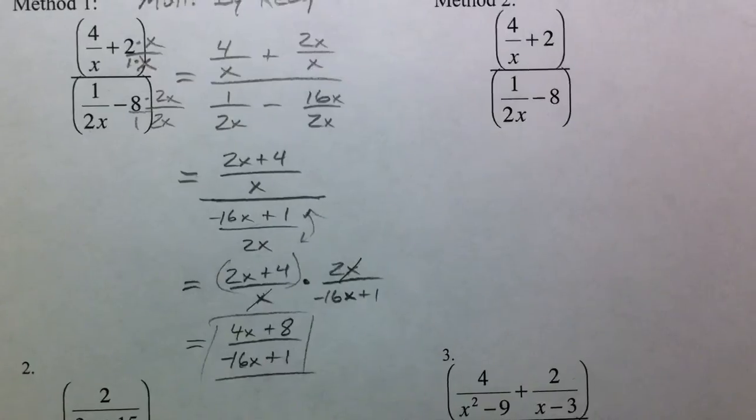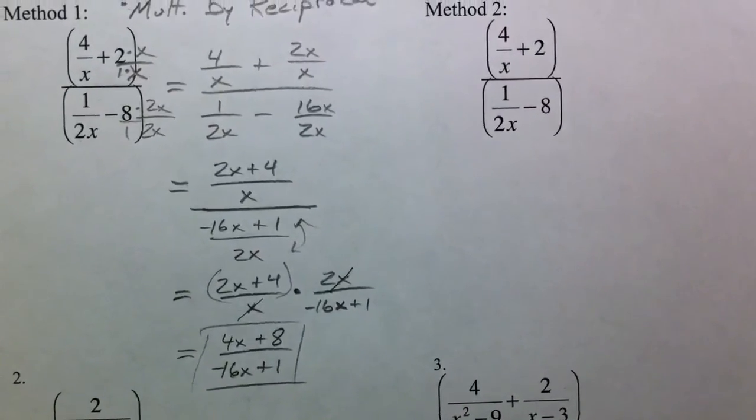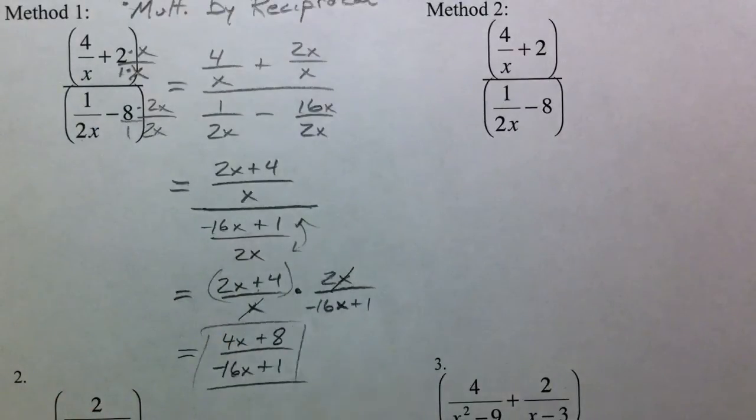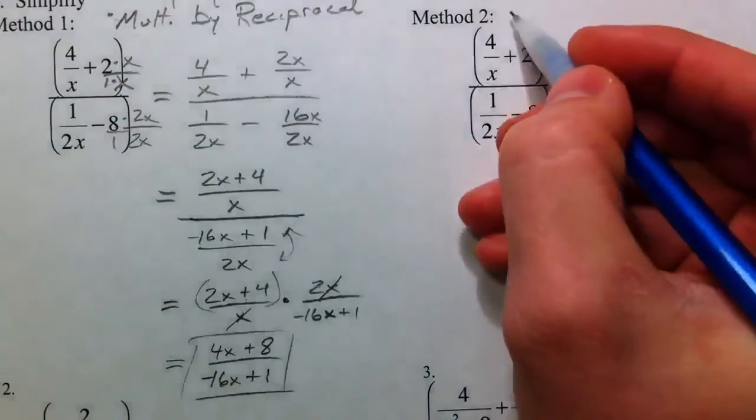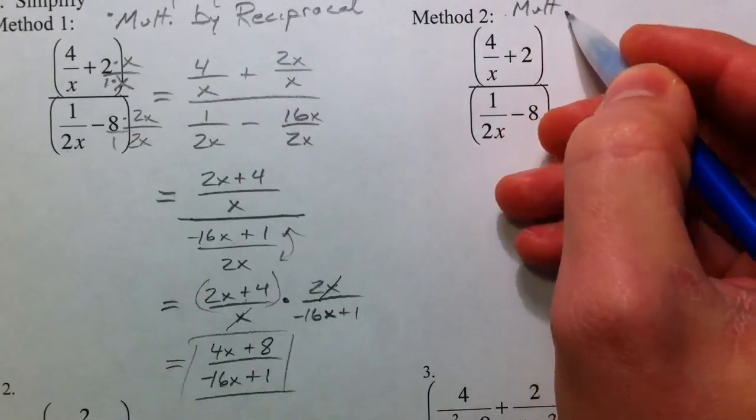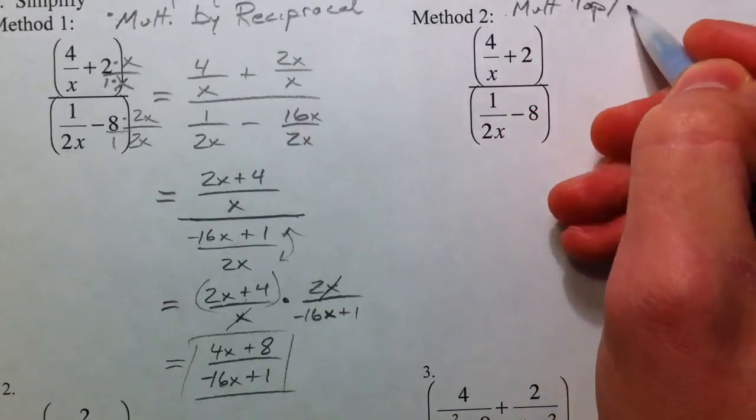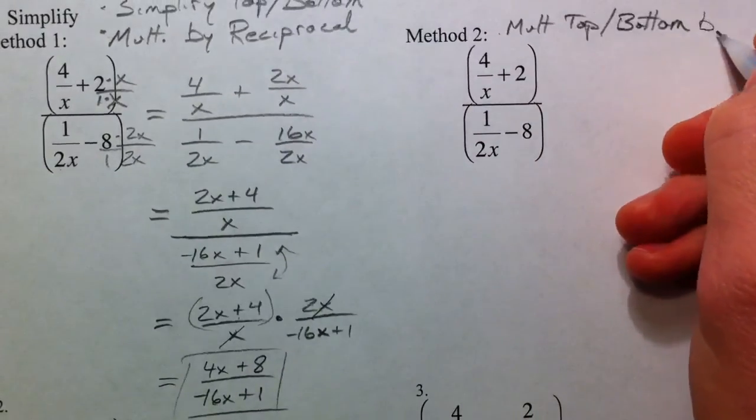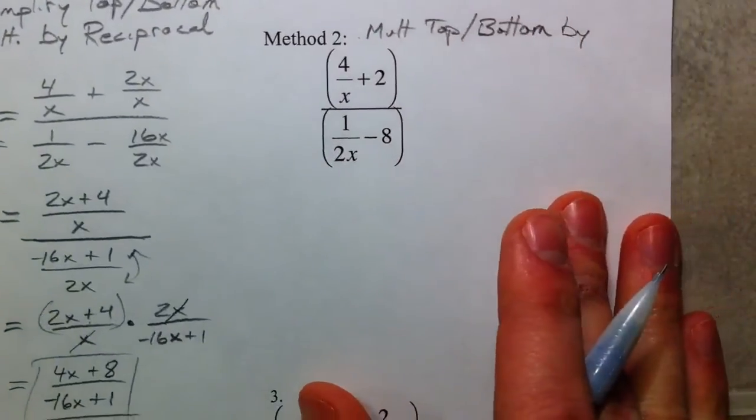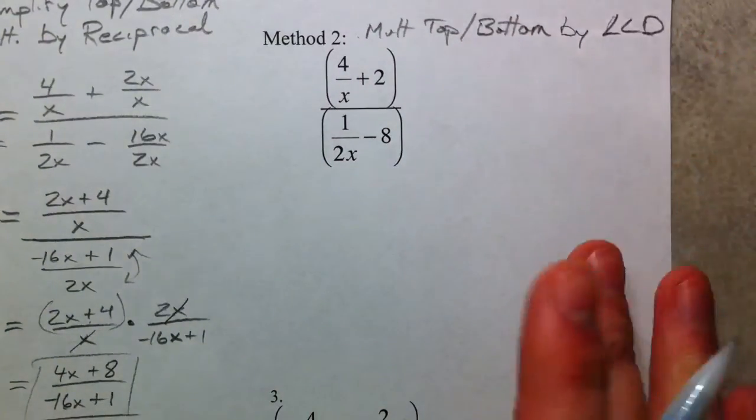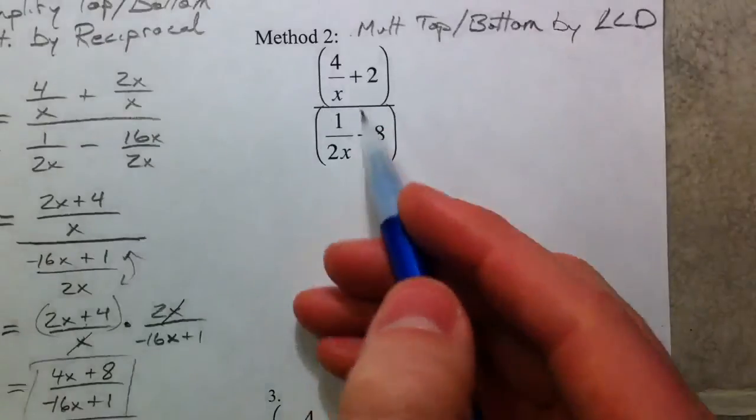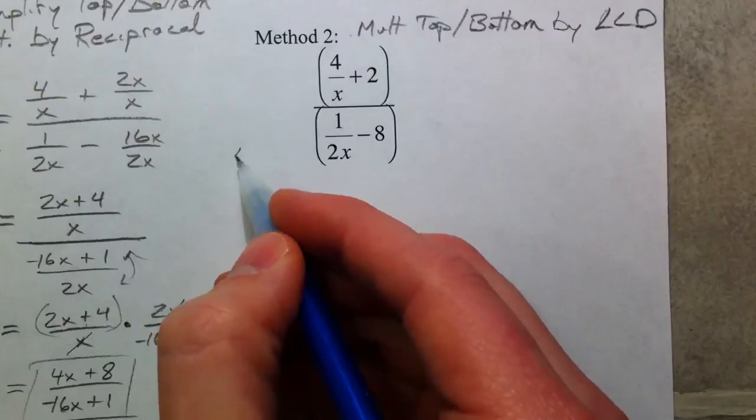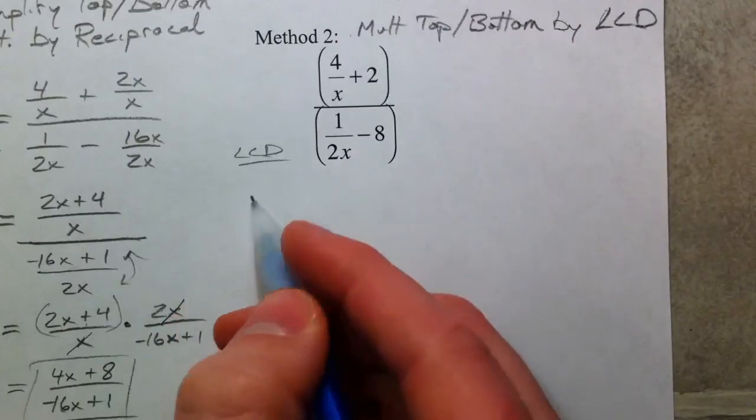And on the bottom, negative 16x plus 1. No common factors on top or bottom, and so that's our first method. Simplify the top, simplify the bottom, and multiply by the reciprocal. Our second method is going to be multiply the top and bottom numerator denominator by the lowest common denominator.